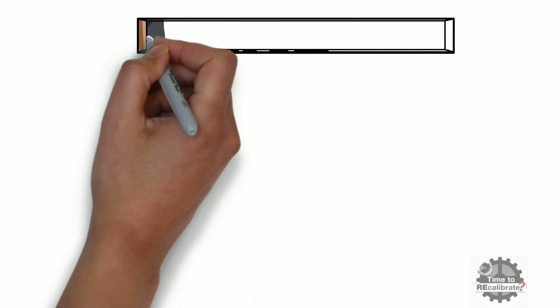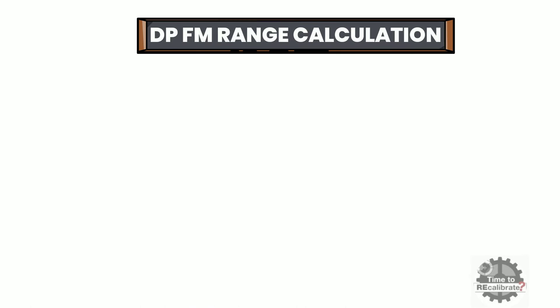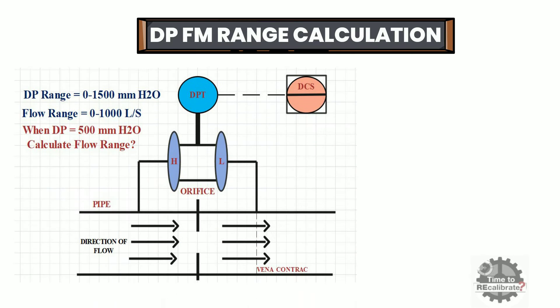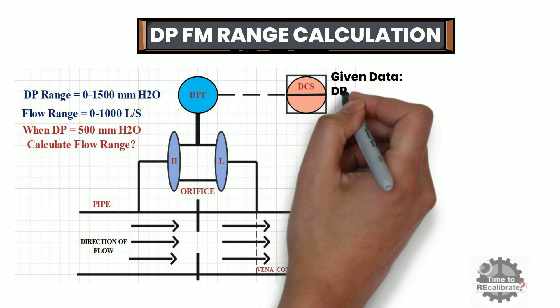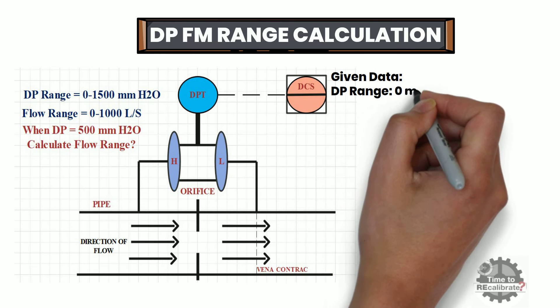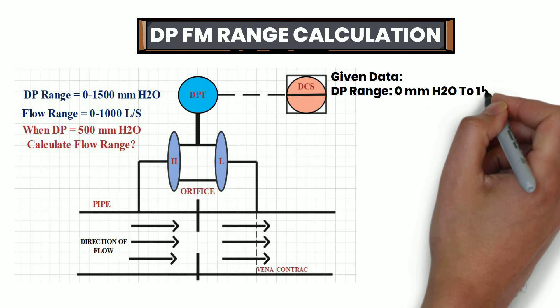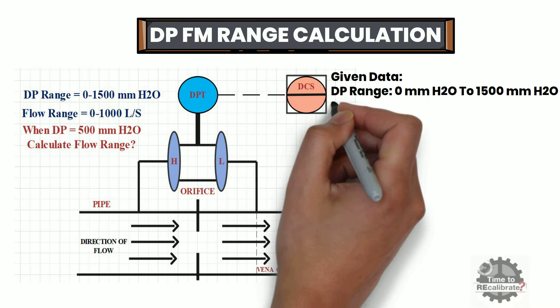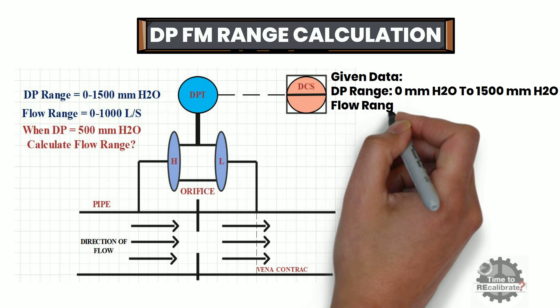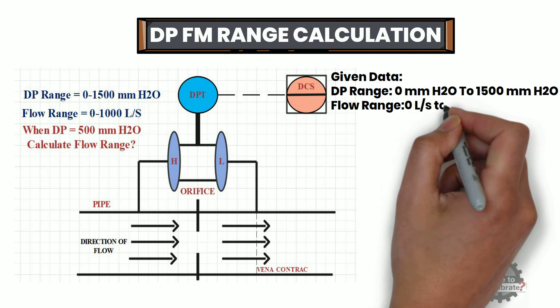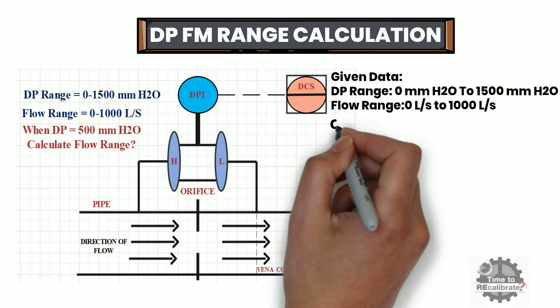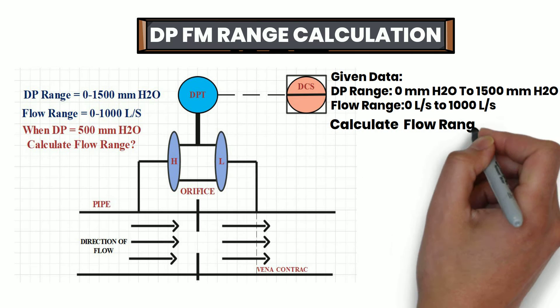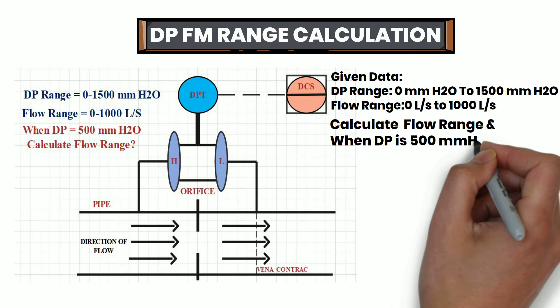Let's take one example to understand the range calculation method of a DP flow transmitter. As you can see from this diagram, the differential pressure range is 0 to 1500 mm H2O for this DP transmitter, and the flow range is 0 to 1000 liters per second. We need to calculate the flow range when differential pressure is 500 mm H2O.